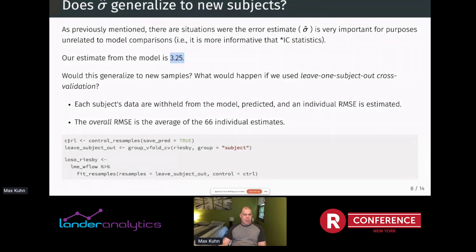And it turns out in tidy models, that's really easy. We have a control object that will save the prediction so we can show some more plots. We already have a function that can do leave subject out. We would give this group_vfold_cv function the data set and then the column that corresponds to the experimental unit, which is subject here. And then our fit_resamples function is already designed to do resampling. It doesn't do any model tuning or anything. It just resamples the same model across different objects that are created by the rsample package.